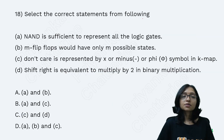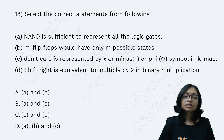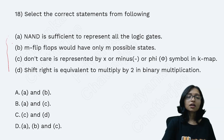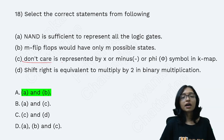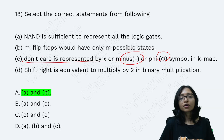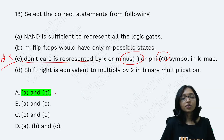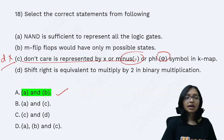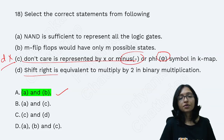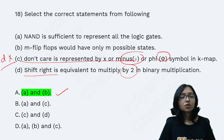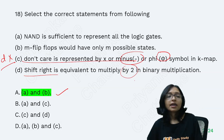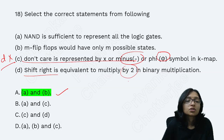For the digital logic question on don't-care conditions: in digital logic, don't-care conditions are neither 0 nor 1 — we denote them as 'd' or 'x'. Therefore A and B are correct. Shift right is equivalent to division and shift left to multiplication in binary operations. Options A and B are the correct answers.